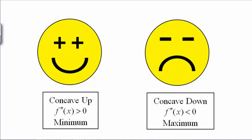Here's a nice way to remember the second derivative test. If you have a happy smiley face, meaning your second derivative is positive, that's concave up, and you can see from the picture that it's a local min. If your second derivative is negative, you've got a frowny face — concave down — and you can see from the picture that it's a local max.